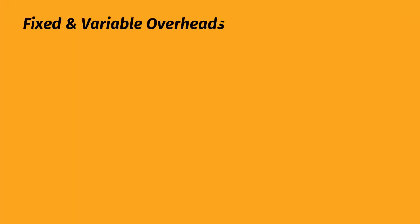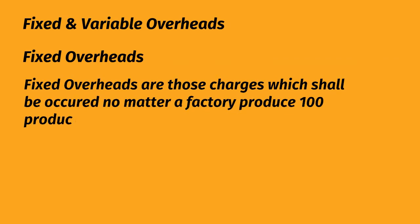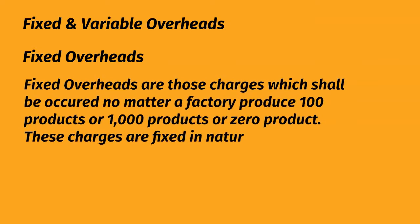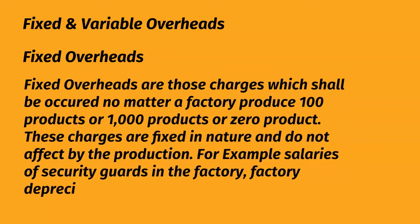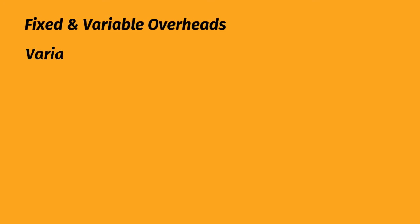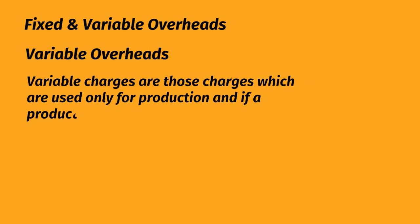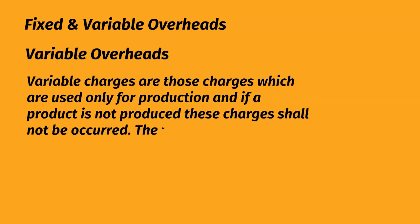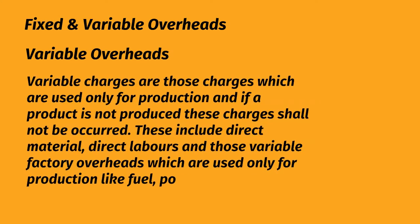Fixed and Variable Overheads. Fixed overheads are those charges which shall be incurred no matter whether a factory produces 100 products, 1000 products, or zero products. These charges are fixed in nature and are not affected by production levels. Examples include salaries of security guards in the factory, factory depreciation, insurance, and rent of factory. Variable charges are those charges which are incurred only for production; if no product is produced, these charges will not be incurred. These include direct material, direct labor, and variable factory overheads used only for production — such as fuel, power, supplies, and tools.